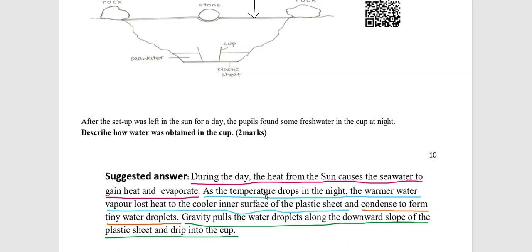Gravity pulls the water droplets along the downward slope of the plastic sheet and drip into the cup. As you can see, there are four areas to be given in this suggested answer and they are differentiated by the different underlined colours.